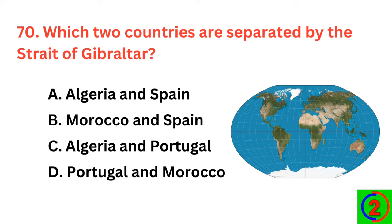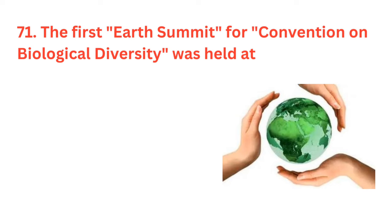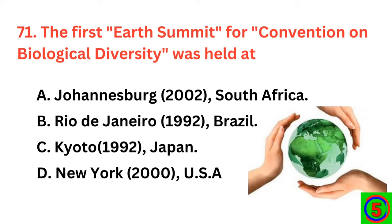Which two countries are separated by the Strait of Gibraltar? The correct answer is option B: Morocco and Spain. The first Earth Summit for Convention on Biological Diversity was held at? The correct answer is option B: Rio de Janeiro, 1992, Brazil.